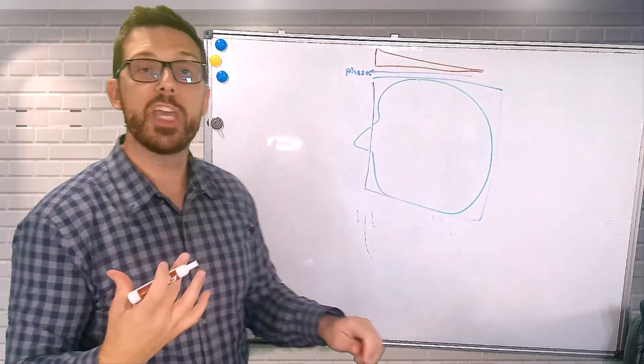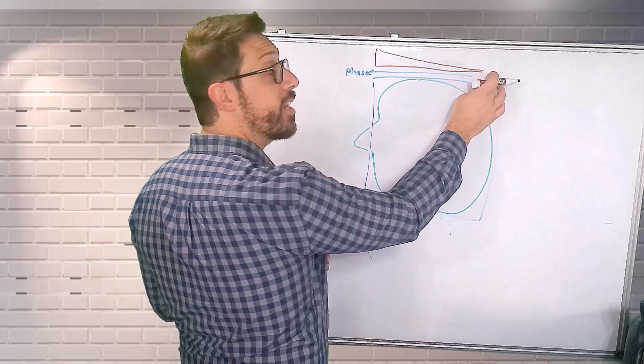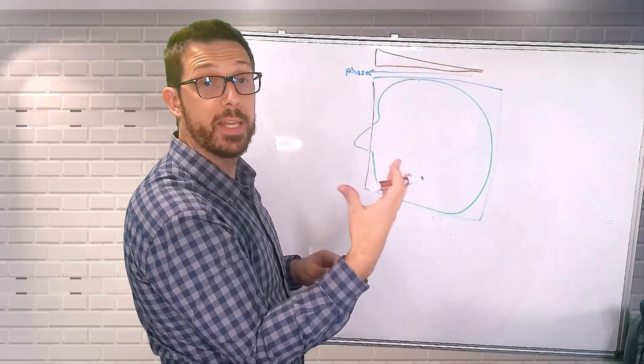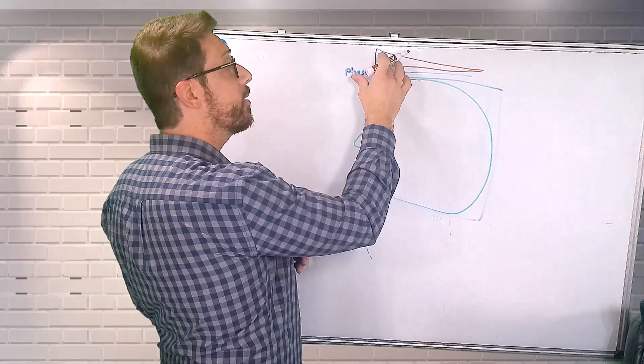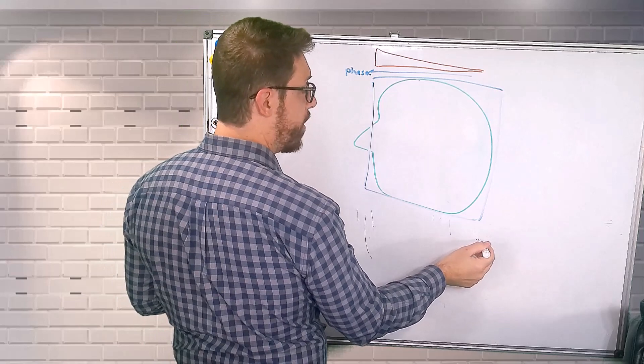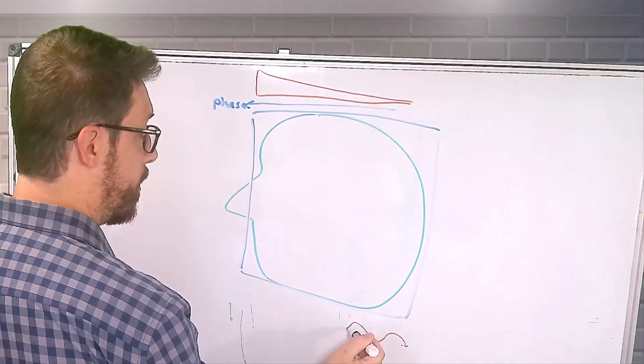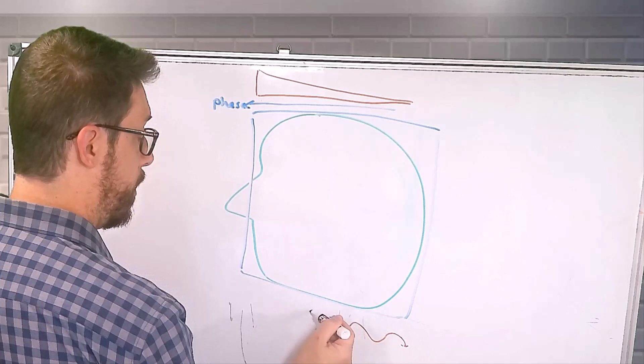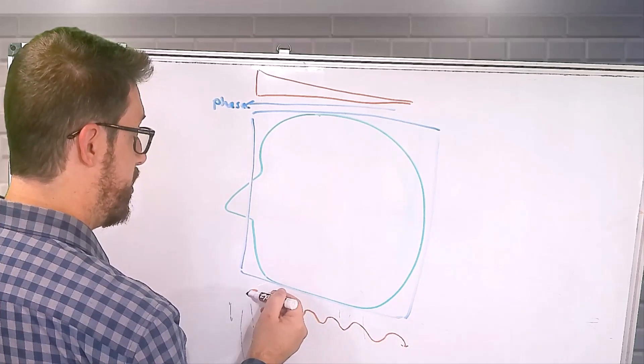And what that does is it changes the precessional frequency of hydrogen. So hydrogen exposed to a weaker gradient are going to precess slower than hydrogen exposed to a stronger gradient. I'm going to try to draw this. So it's going to get faster and faster and faster.